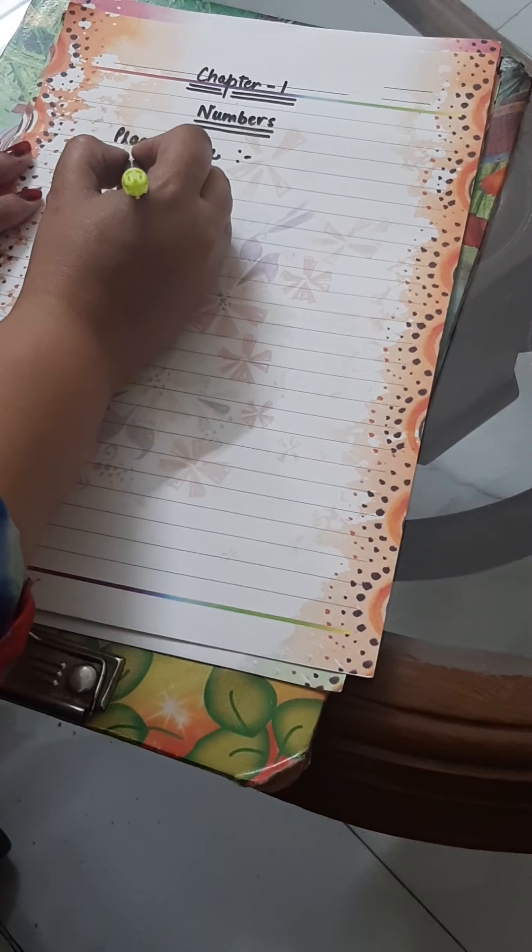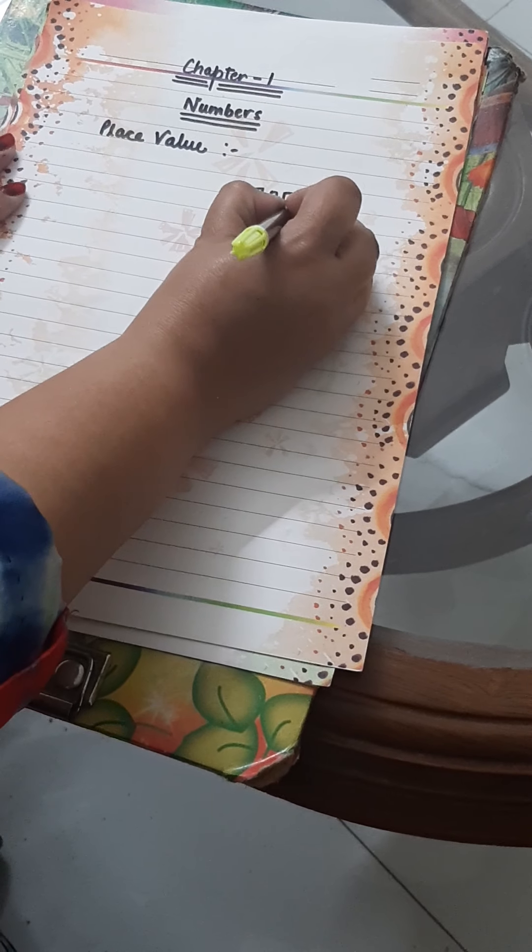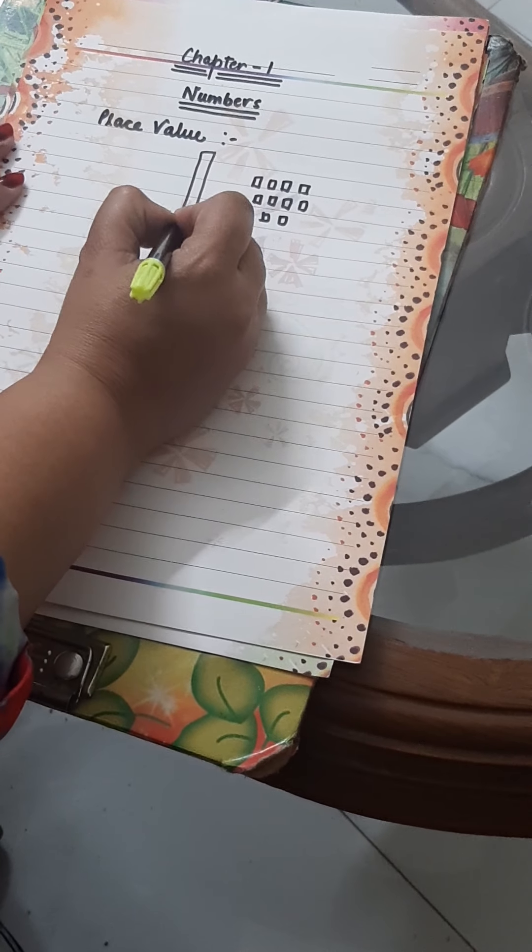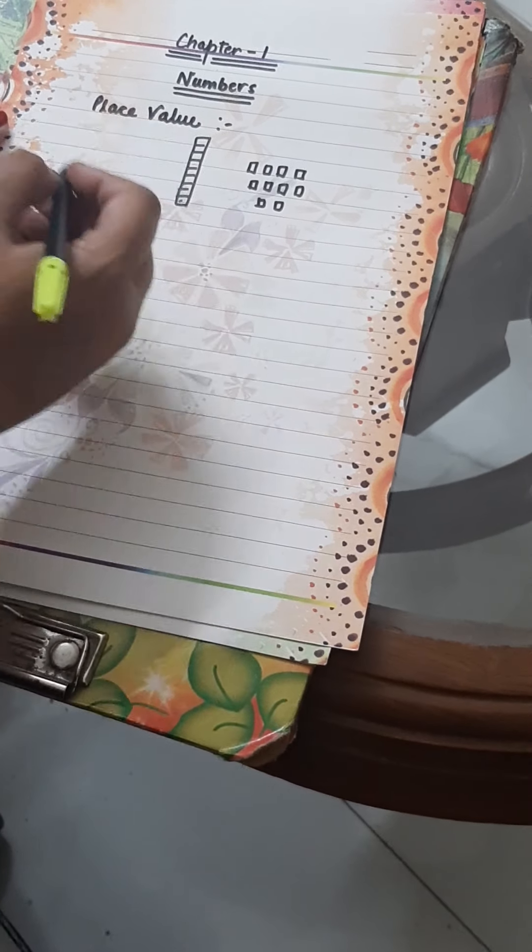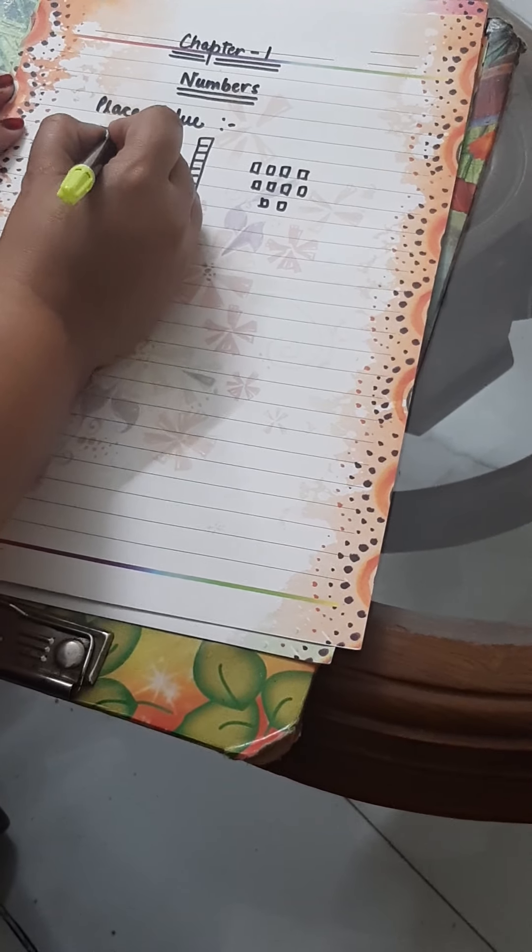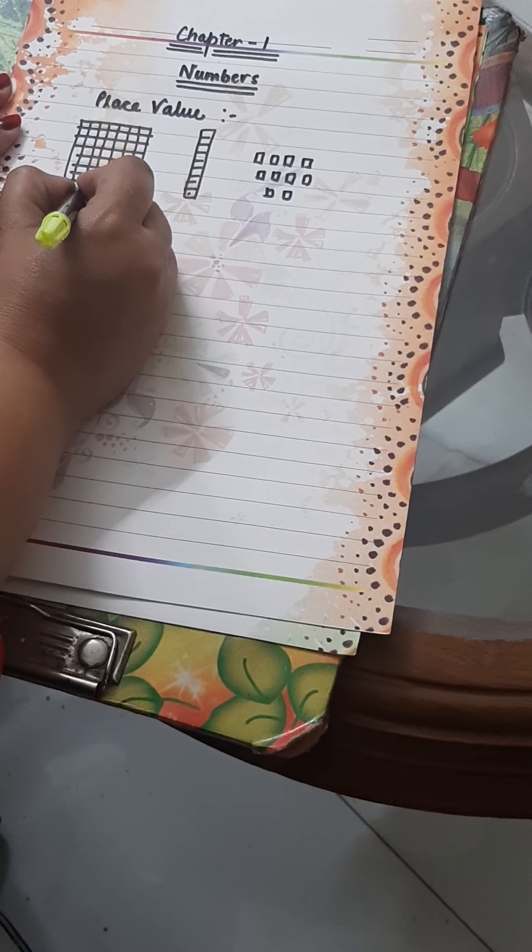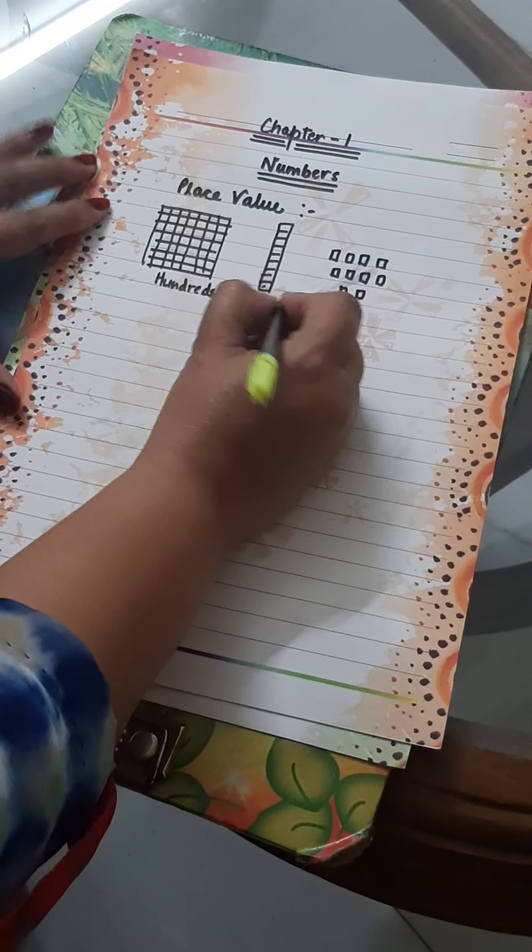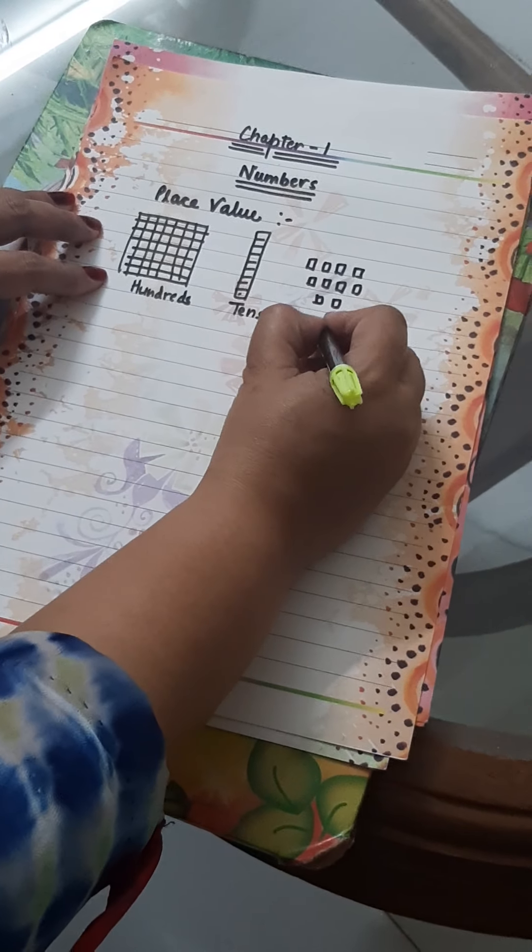I have given you small cubes. Suppose we are having 10 cubes. All these 10 cubes will form, when we will put them one on one, they will form a rod. And when 10 rods all together combine, they usually form a hundreds. This represents hundreds. This is tens because it is 10, and these are ones.